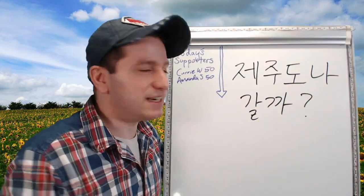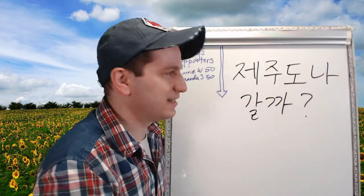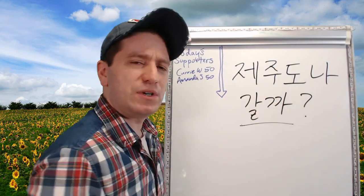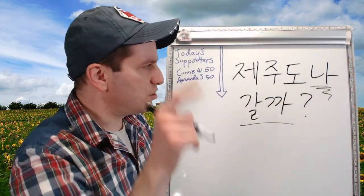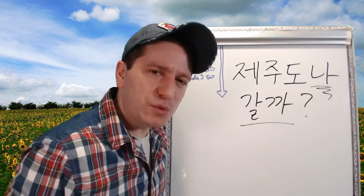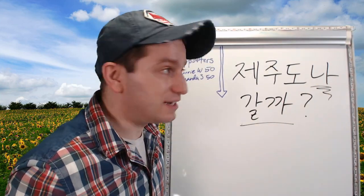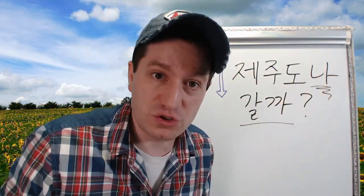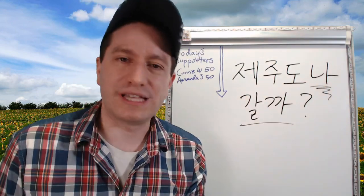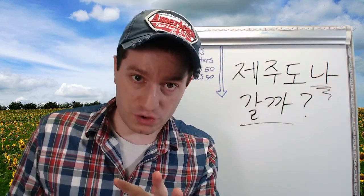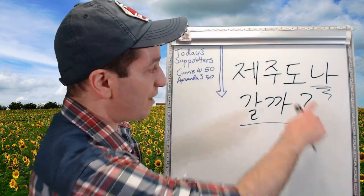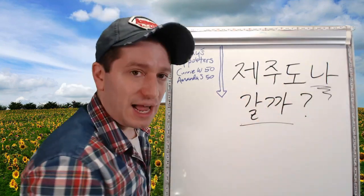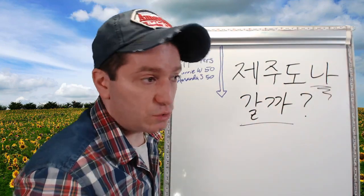제주도 is the island of 제주 — '도' means island. 제주도나 갈까? — 'Shall we go to Jeju or somewhere?' Notice that 나 took the place of what would normally be the particle 에 meaning 'to.' 제주도에 갈까? would be 'Shall we go to Jeju?' So 나 can replace the particle that was normally there. You don't have to say 제주도에나 — you can just say 제주도나 갈까? — 'Shall we go to Jeju or somewhere like that?'